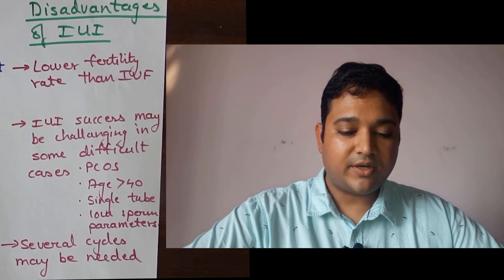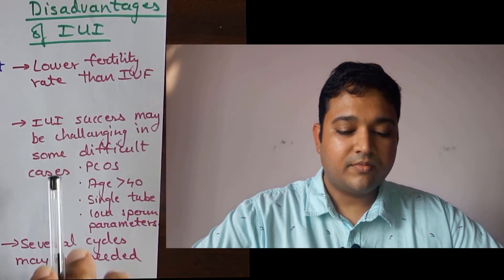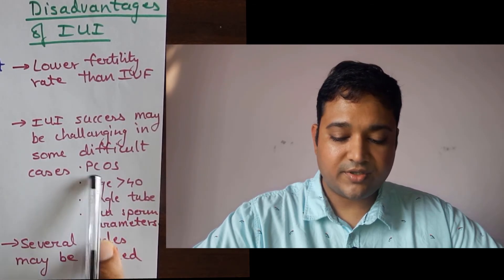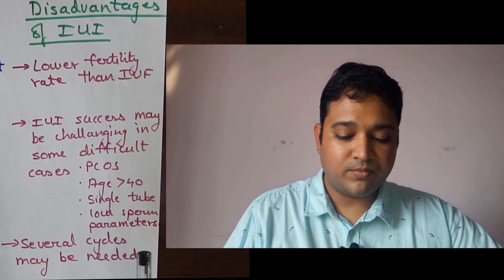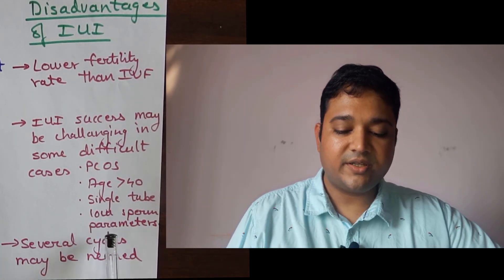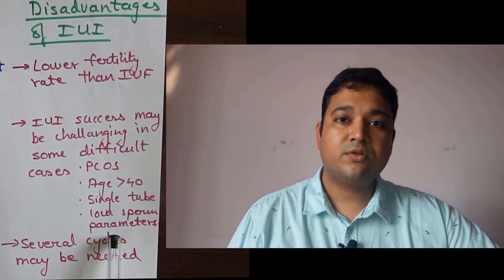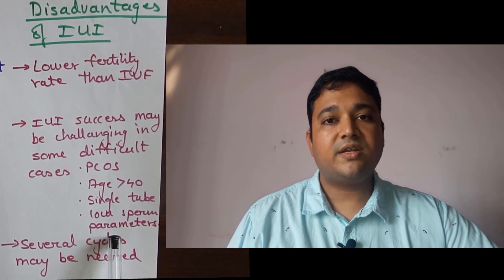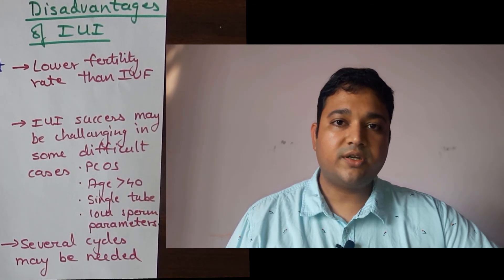What are the disadvantages of IUI treatment? IUI has a much lower success rate compared to IVF. IUI success rates may be challenging in difficult cases like resistant polycystic ovaries, women over 40 years of age, a single functional fallopian tube, or very low sperm parameters in the husband — such as sperm count less than 20 million, low motility, and poor morphology. IUI starts suffering when parameters are very low, and in these cases we recommend IVF with ICSI.